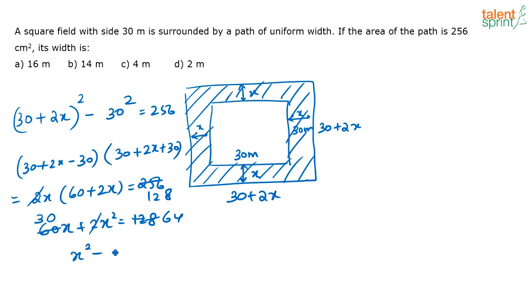So you have x squared plus 30x minus 64 that is equal to 0. Now what do you do? Now you have to find out the roots.